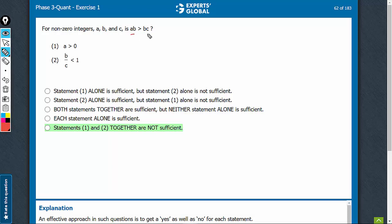Whether ab is greater than bc? Statement 1 talks about only a, so not sufficient. Statement 2 also has very little information. It only says b upon c is less than 1, leads to various possibilities. Statement 2 is also not sufficient.